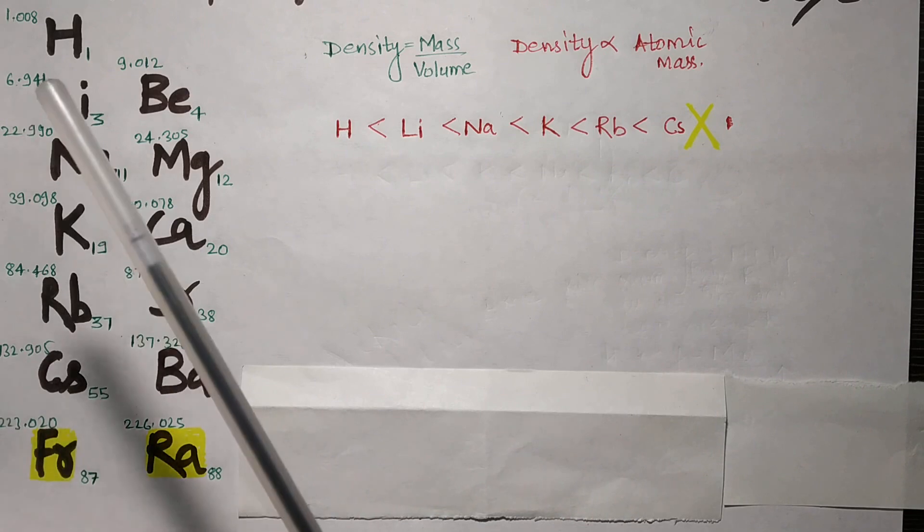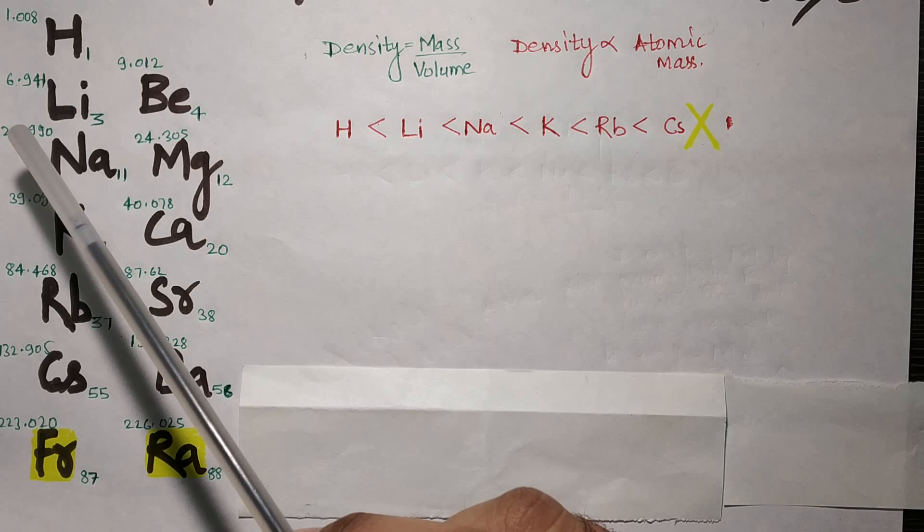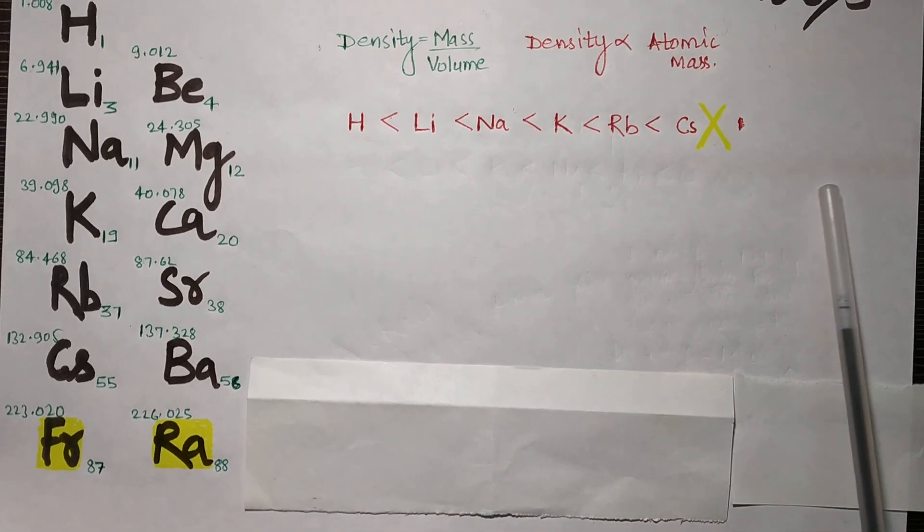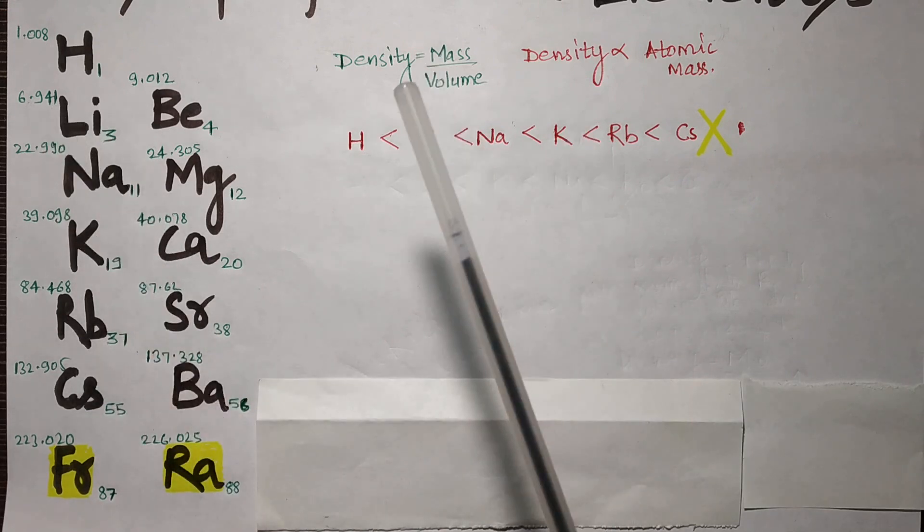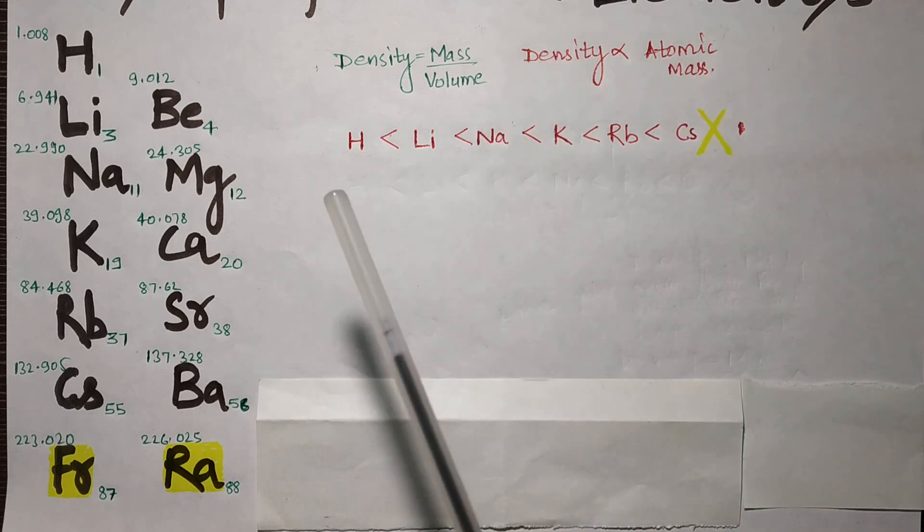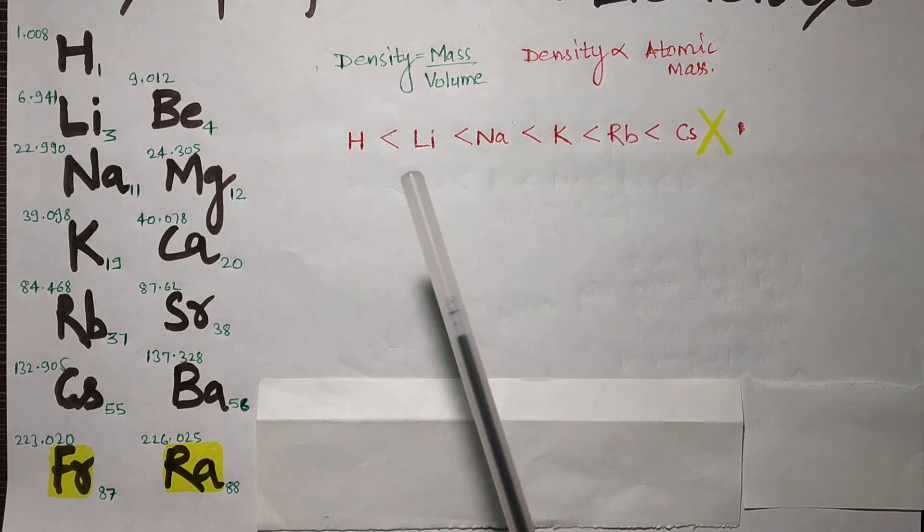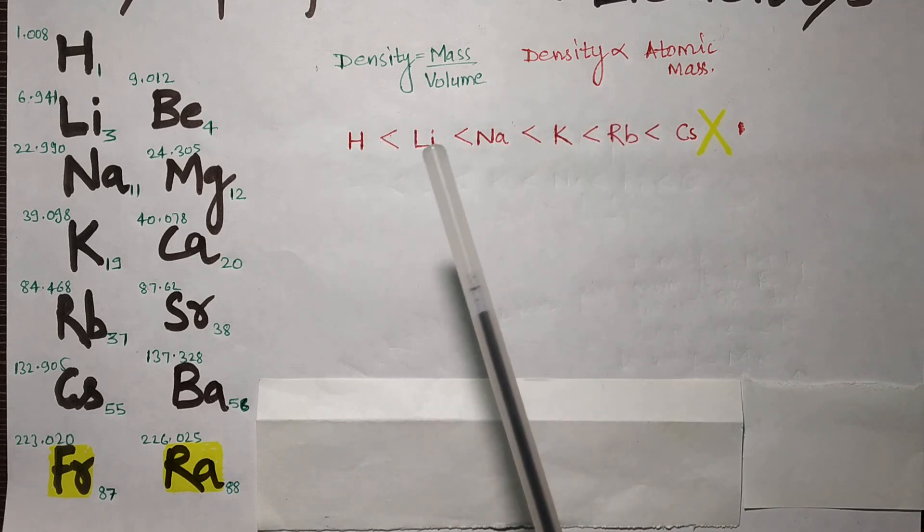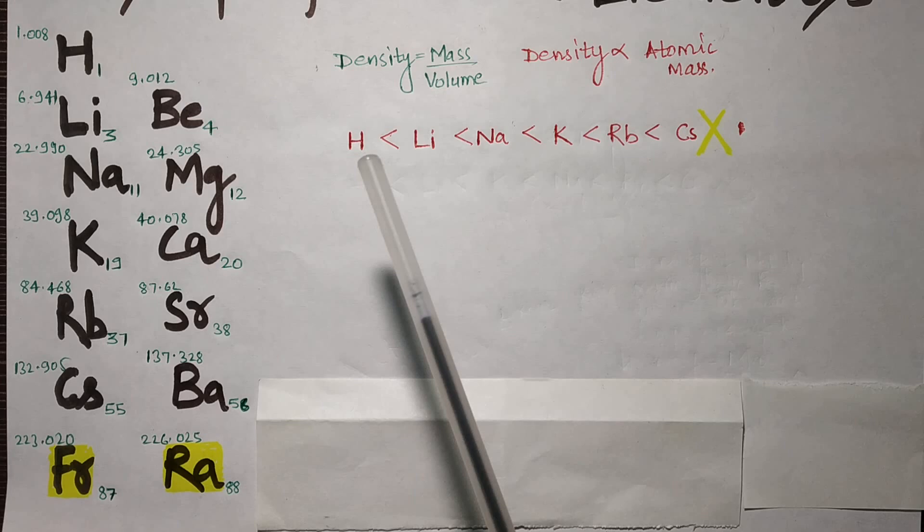If we go down the group, atomic mass increases significantly as compared to volume, so density is directly proportional to atomic mass. The trend going down the group from hydrogen, lithium, sodium, potassium, rubidium, cesium is that density increases because atomic mass increases.